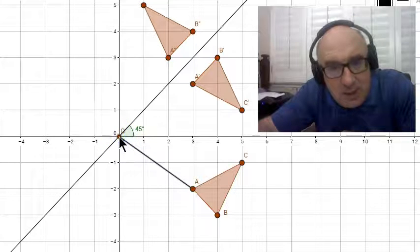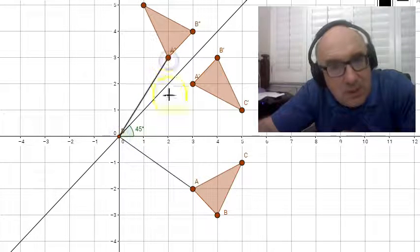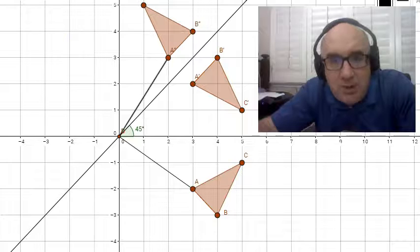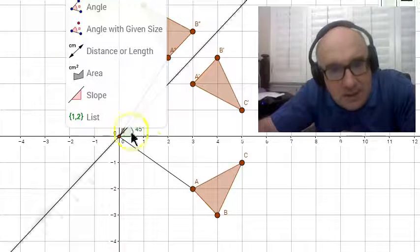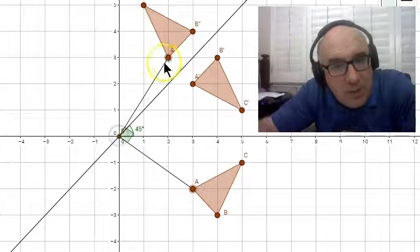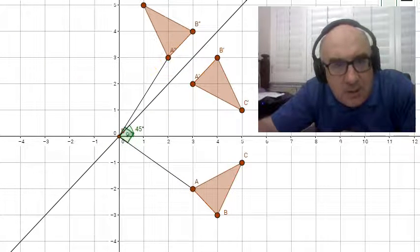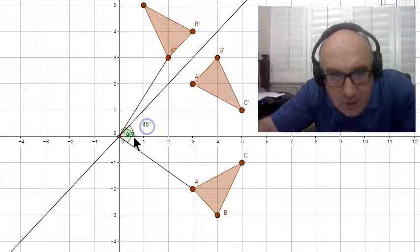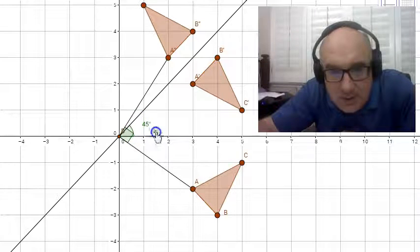So A to the center to A double prime. Let's measure that angle and see how much of a rotation it's been. It's kind of lost in there a little bit. Let me bring my 45 out and, oh, there it is.